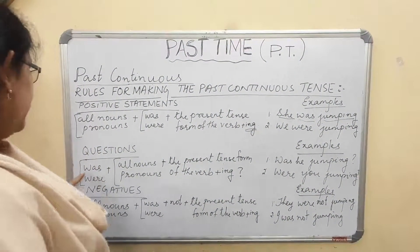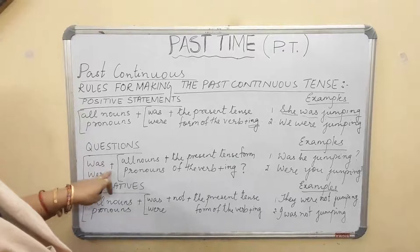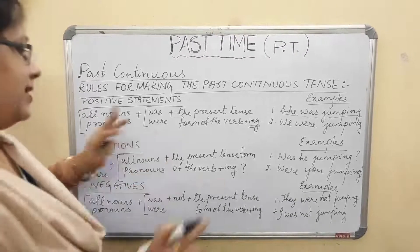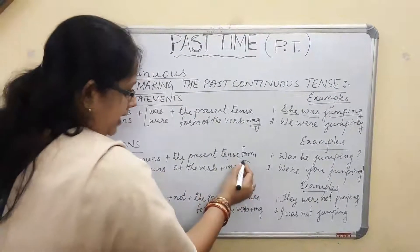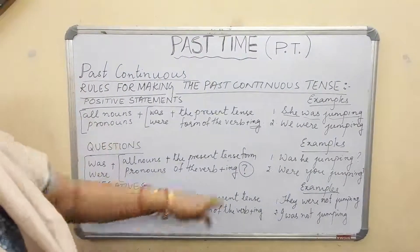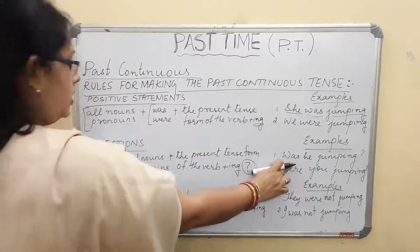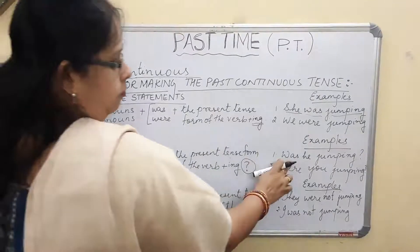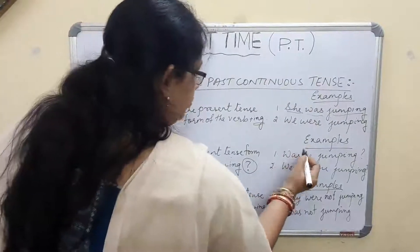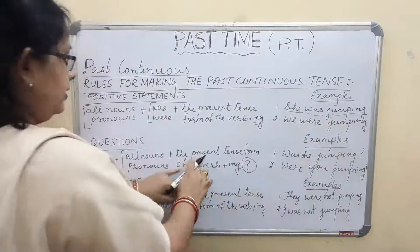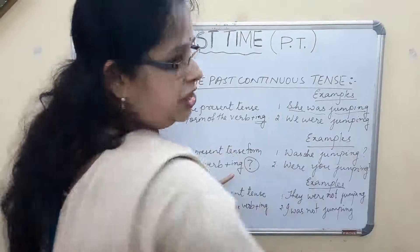For questions, we begin with 'was' or 'were' since it is past tense, followed by all nouns or pronouns, then the present tense form of the verb plus '-ing', and ending with a question mark. For example: 'Was she jumping?' or 'Were you jumping?'